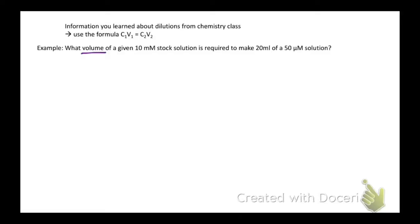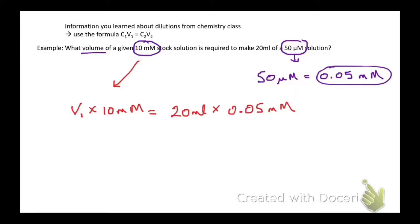The first thing that we want to do is make sure that the units match. We've got 10 millimolar and 50 micromolar. We're going to convert the 50 micromolar to millimolar. 50 micromolar is the same as 0.05 millimolar. Now we can plug the numbers into the formula.